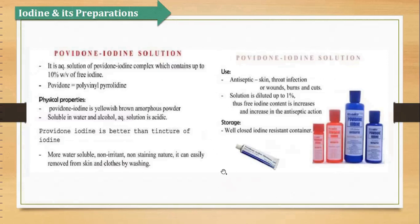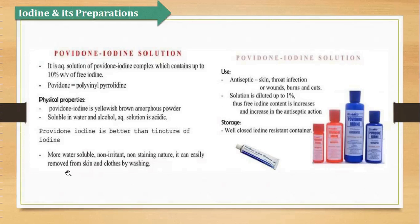Then is the povidone iodine solution. It is 10% weight by volume of free iodine. Povidone kya hai ismein — povidone hai polyvinyl pyrrolidone — in donon ka mixture hai. Properties: povidone iodine is a yellowish brown amorphous powder. Polyvinyl pyrrolidone iodine ke saath complex bana deta hai. It is soluble in water and alcohol, and the solution is acidic. It is more soluble in water, non-irritant, non-staining. It is easily removed from clothes by washing. Isko use karte hain as antiseptic, aur isko further dilute kar sakte hain up to 1%.